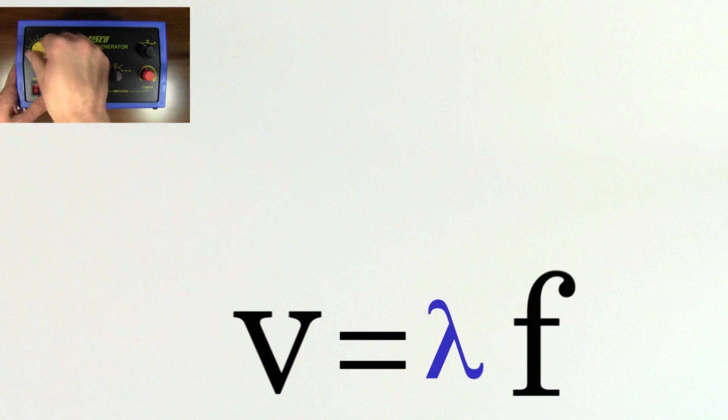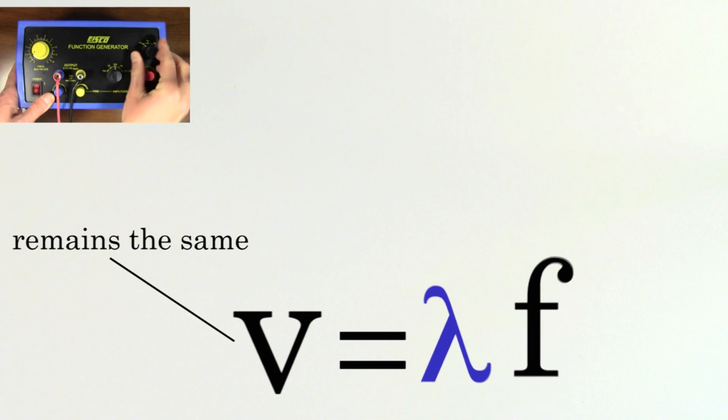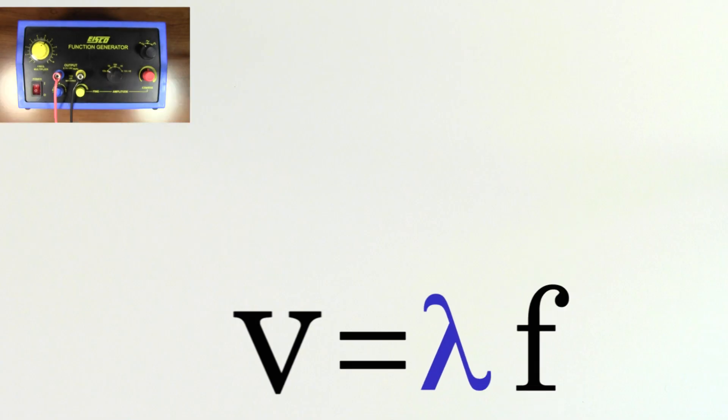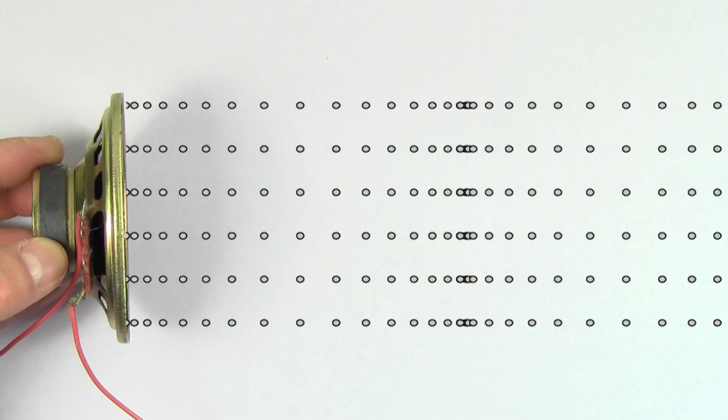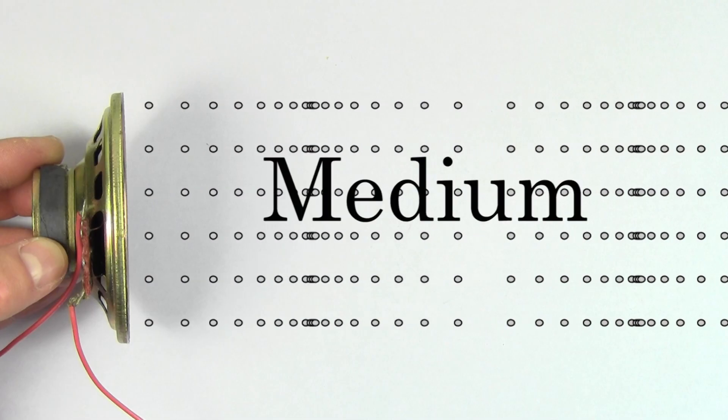In fact, there's nothing you can do to the speaker that would increase the speed of sound. So how can we change the speed of sound? Well, the only way to change the speed of sound is to change the medium or the properties of the medium that the sound wave is traveling in.